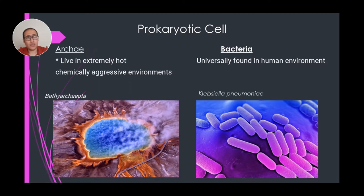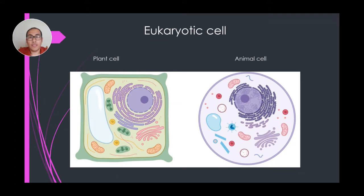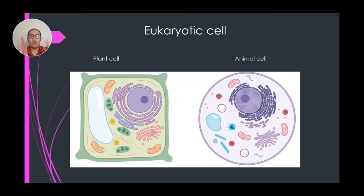I showed a picture of Klebsiella pneumoniae, a type of bacteria that causes infection of the lungs — hence the name pneumoniae. In eukaryotic cell lines, we see mostly plant and animal cells. Plant cells have a rigid boundary, whereas animal cells tend to be more fluid and can be shaped a little bit.